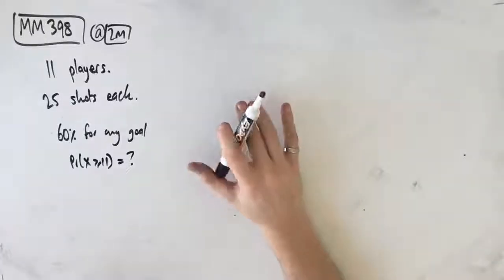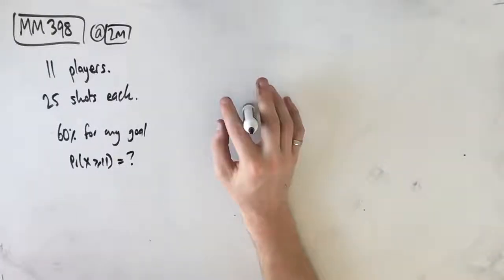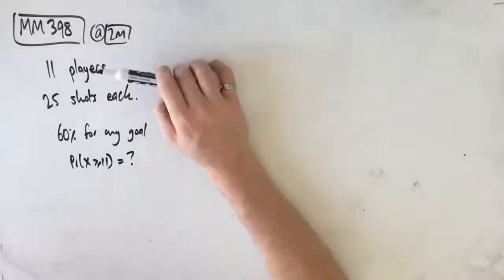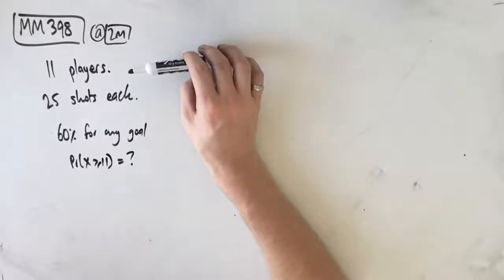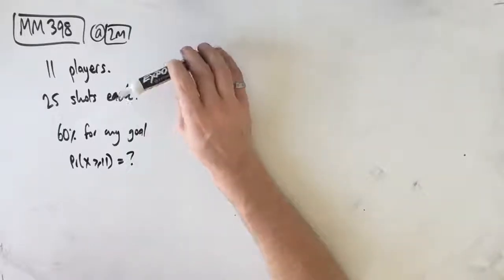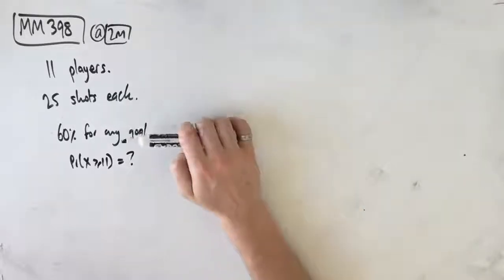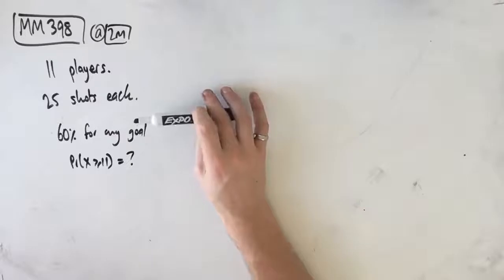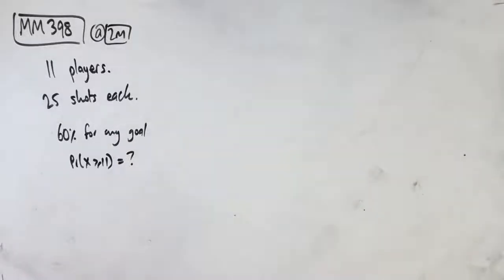Welcome to question MM398 of the Maths Methods Fortify Study Guide. In this question we've got a professional soccer team with 11 players. During their training period, the team practices goal shooting by taking 25 practice shots each. One particular player is observed and his results are recorded. If this player has a 60% chance to score any given goal, determine the probability that he scores at least 11 goals, correct to four decimal places.